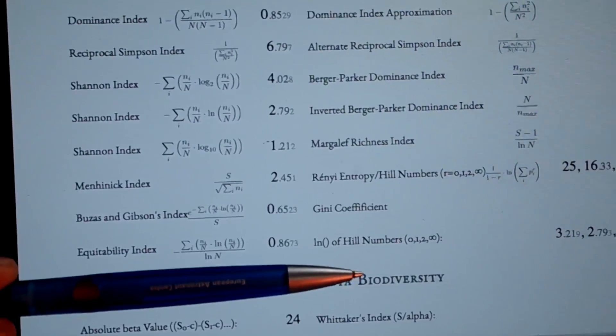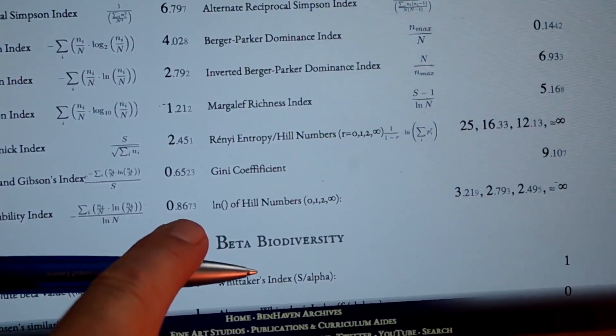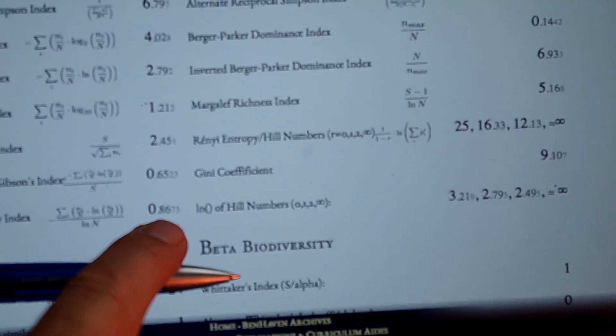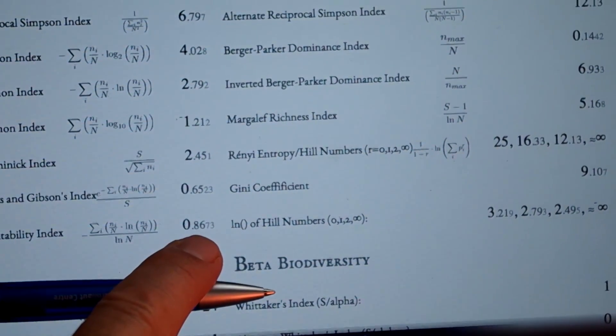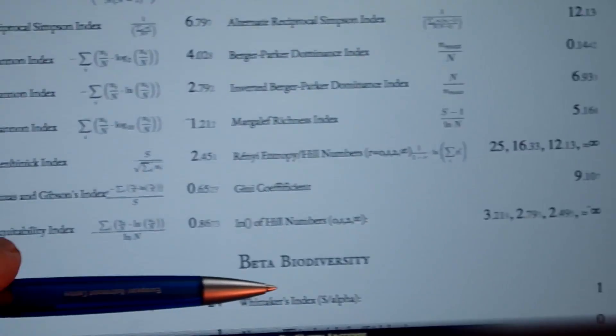The Equitability Index essentially indicates the health of that specific soil sample. To find that number, go down your table on the left to the section called Equitability Index. The computer does the calculation for you. In our case we got 0.8673. The number will be between zero and one — the closer it is to one, the better, meaning the soil is well balanced.